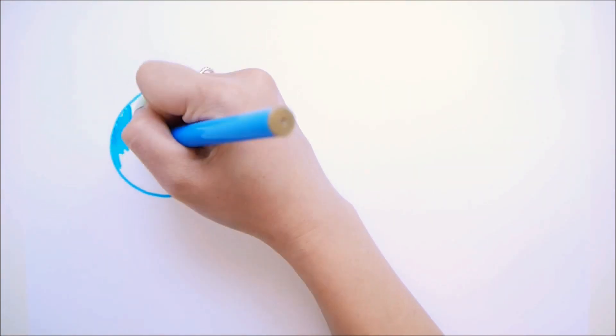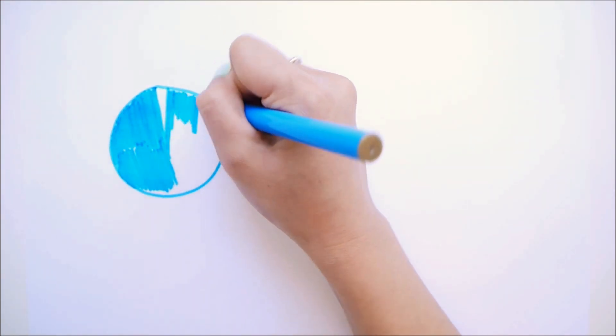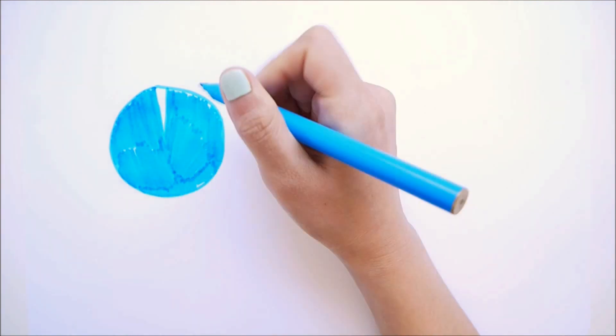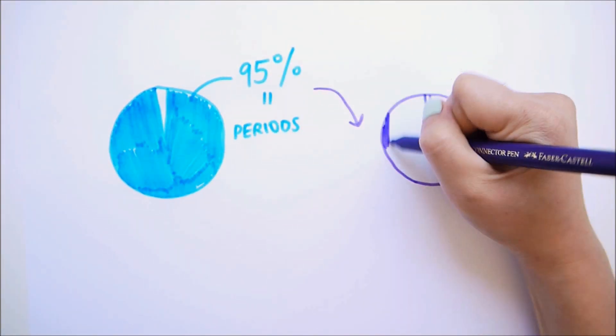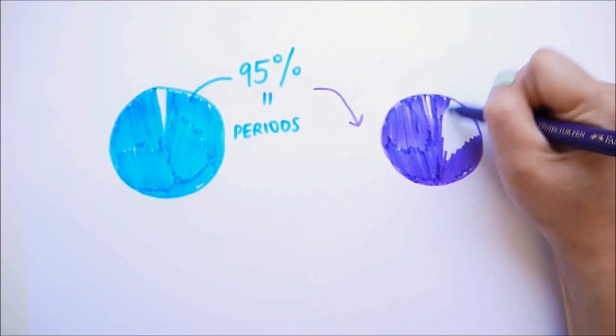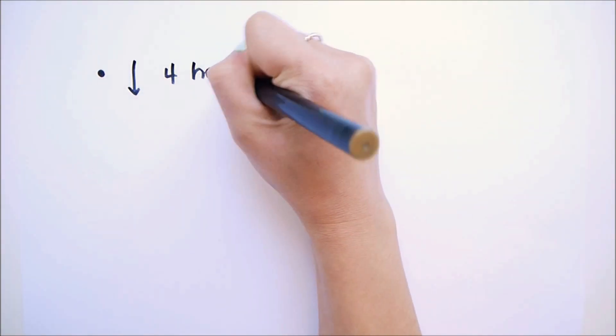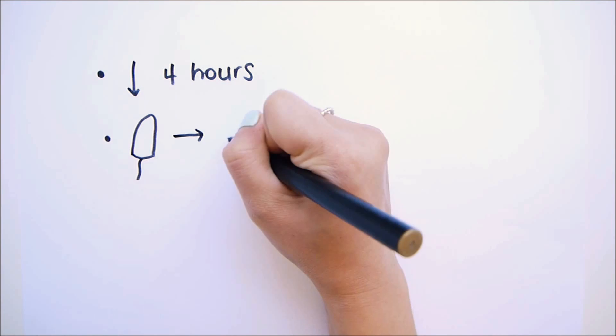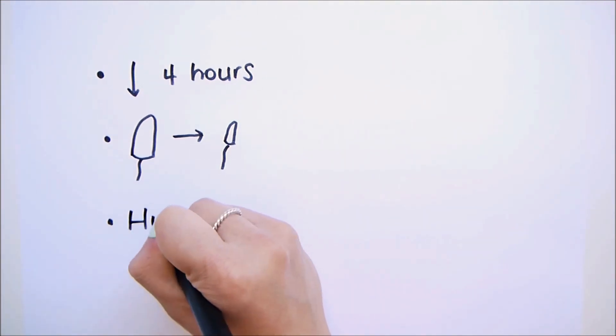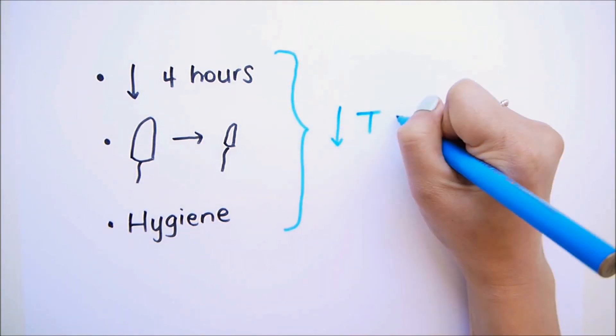It first became a thing in the late 70s, early 80s, when researchers found that 95% of all TSS cases had to do with women having their periods, and 99% of these women were using tampons. Since then, it has been found that leaving tampons in for over 4 hours, decreasing the absorbance of tampons, and observing hygiene in general has helped in bringing those cases of TSS right down.